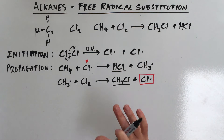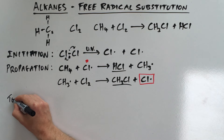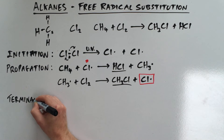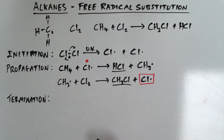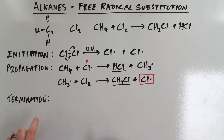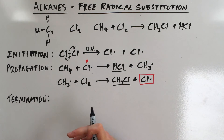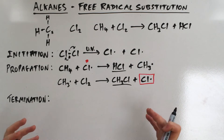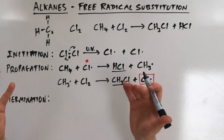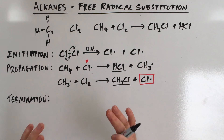Of course, the reaction has to come to an end — something has to happen to actually stop it. This third stage is called termination. In propagation, we have free radicals reacting with larger molecules. But in termination, what's stopping two free radicals from colliding and reacting with each other? Nothing. So in termination, there are three possible steps.